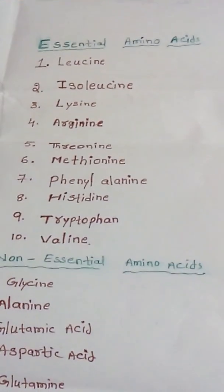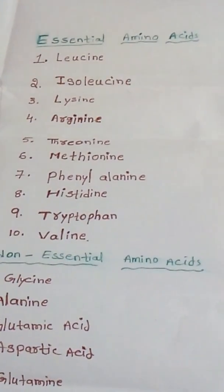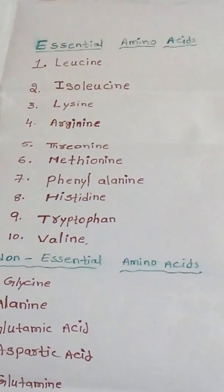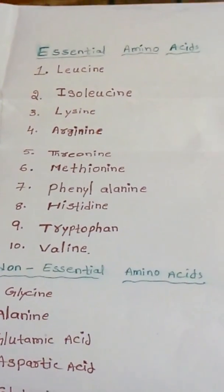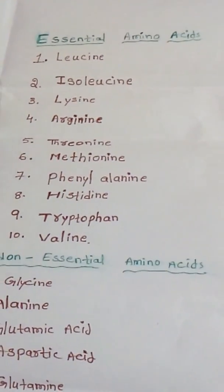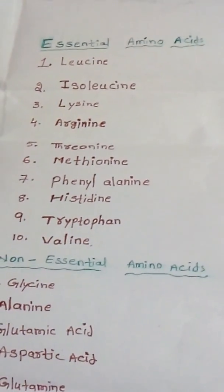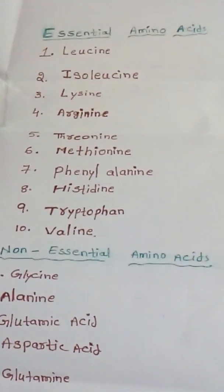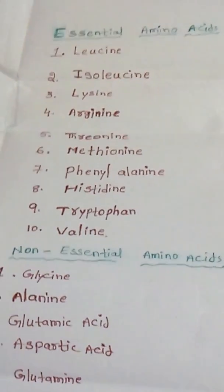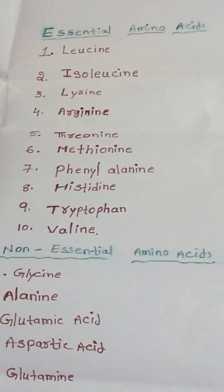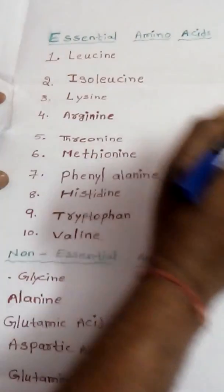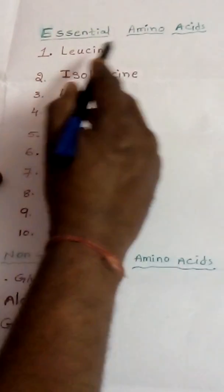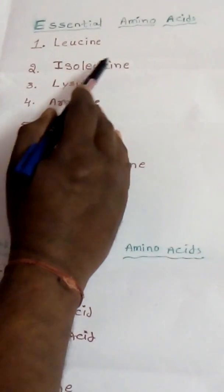In nature, we have 20 amino acids. Among them, 10 are essential amino acids and the other 10 are non-essential amino acids. Those 10 essential amino acids are leucine, isoleucine, lysine, arginine, threonine, methionine, phenylalanine, histidine, tryptophan, and valine.